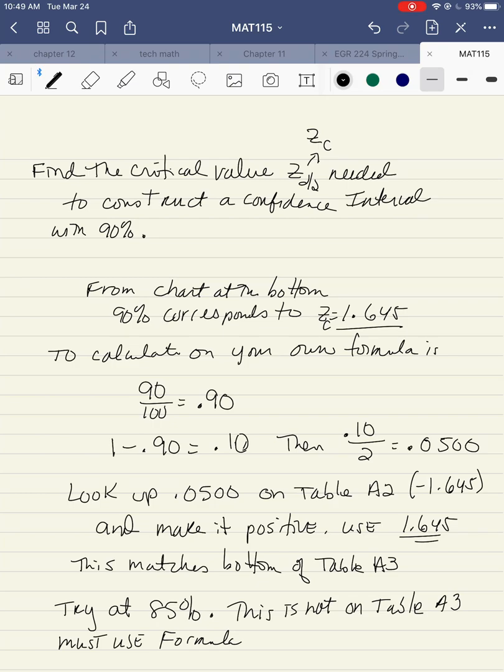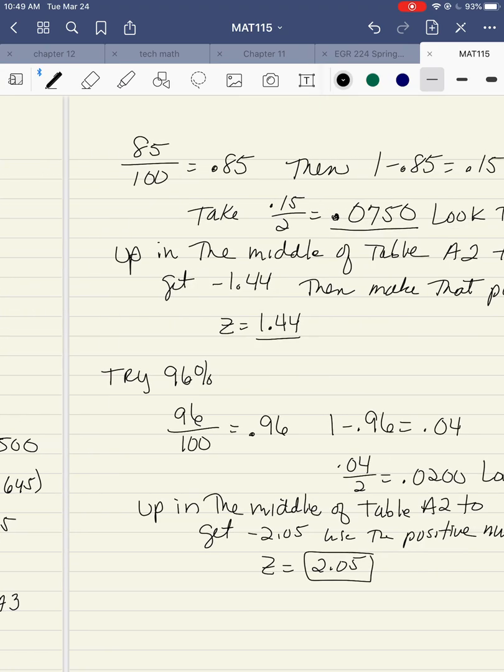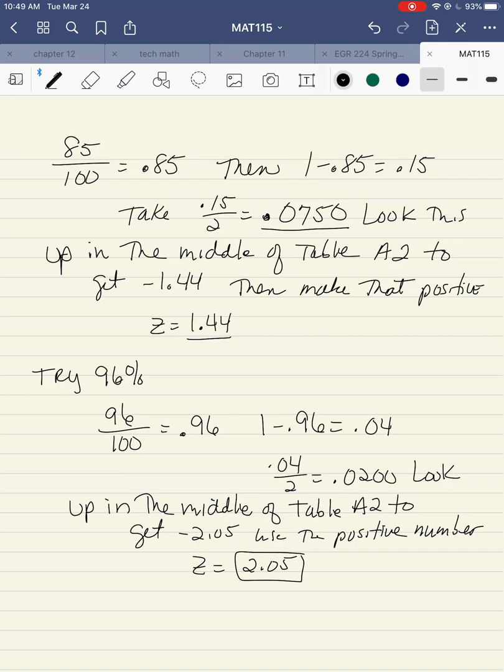So let's try another one at 85%. 85%, this is not on table A3, so we have to use the formula. And once I calculate this for 85%, you won't have to do it again, just mark it on your table. So you first convert it to decimal. 85 divided by 100 is 0.85. Then subtract that from 1, so 1 minus 0.85 is 0.15. Then you take the 0.15 divided by 2, so you get 0.0750.